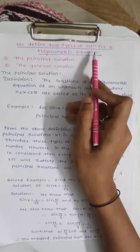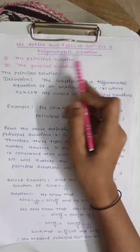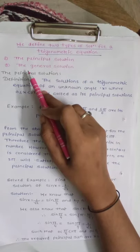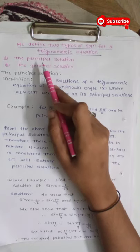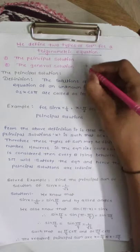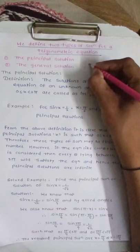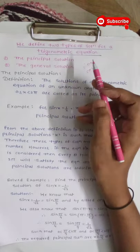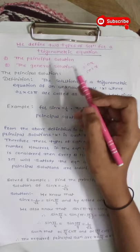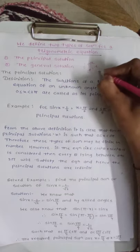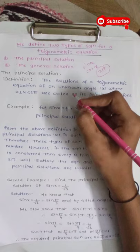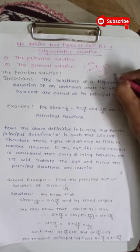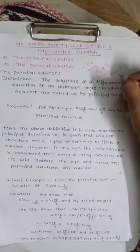We define two types of solutions for a trigonometric equation: first is the principal solution, and the second is the general solution. To understand the principal solution, we know that sin x and cos x repeat themselves after an interval of 2 pi, and tan x repeats itself after an interval of pi.